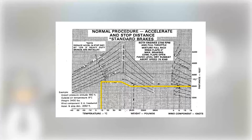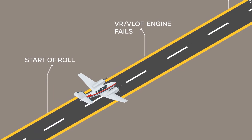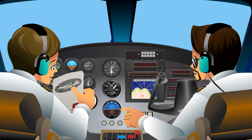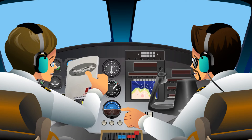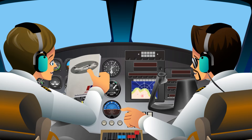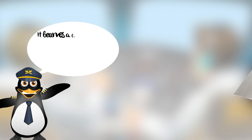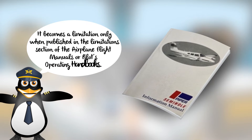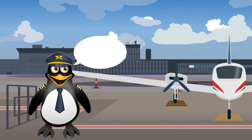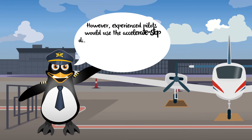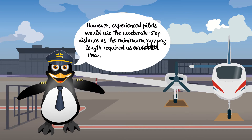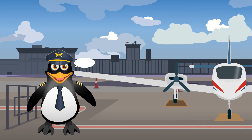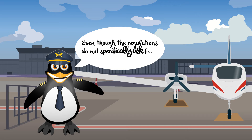The regulations do not specifically require that the runway length be equal to or greater than the accelerate stop distance for multi-engine aircraft to take off. Most airplane flight manuals or pilots operating handbooks publish accelerate stop distances only as an advisory. It becomes a limitation only when published in the limitations section of the airplane flight manuals or pilots operating handbooks. However, experienced pilots would use the accelerate stop distance as the minimum runway length required as an added margin for safety and good operating practice, even though the regulations do not specifically ask for it.